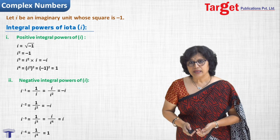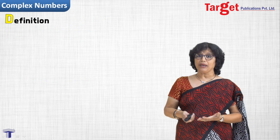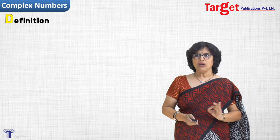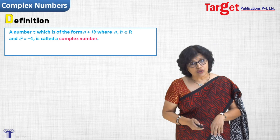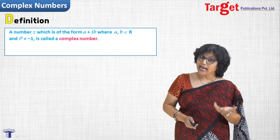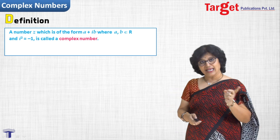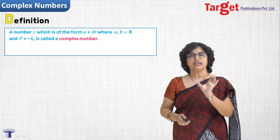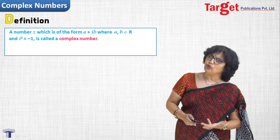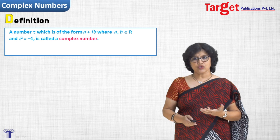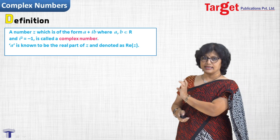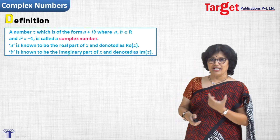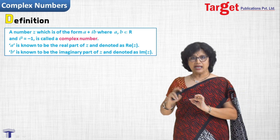Now let us define once and for all what we mean by a complex number. A complex number z is of the form a plus ib, where a and b are real numbers and i squared is taken as minus 1. Such a number is called a complex number. There are fixed terms used: a is called the real part, written as Re(z), and b is called the imaginary part, written as Im(z).